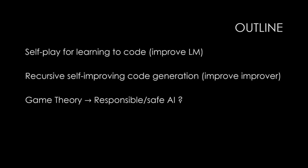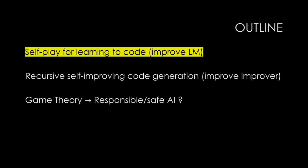We'll talk about three things. First, how you can get a self-play — like in chess and go where the AI plays against itself — to get the language model to maybe improve itself, though the improver was written by us. Then we'll think ahead about whether we could get the improver to write the improver itself. And finally, how we can use game theory to help design safe and responsible AI. Let's start with self-play for learning to code.